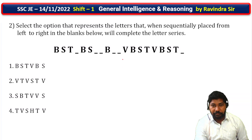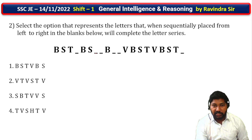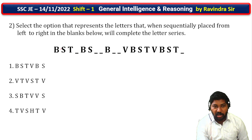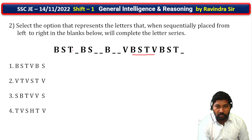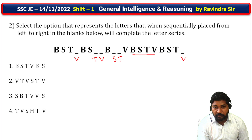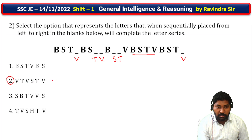Next, second question. A series of letters with blanks in the middle — we need to fill in the options. The series starts with B: B-S-T-V. The pattern is B-S-T-V repeating. So B-S-T-V, B-S-T-V, B-S-T-V. The second option is the correct answer. This is how easy it is to solve.